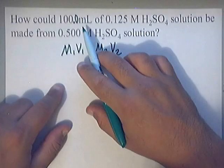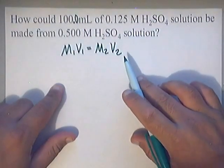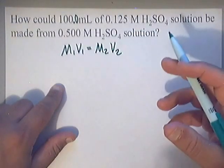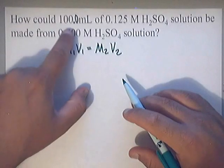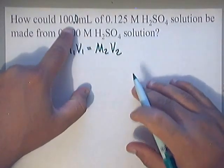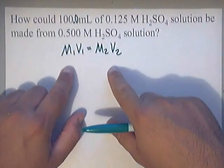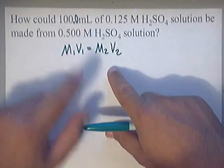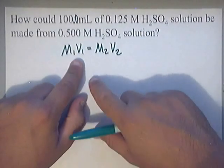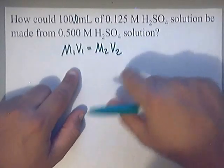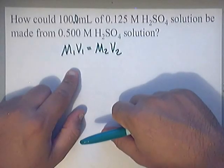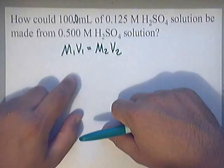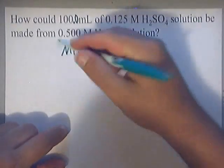If you do the calculation in milliliters, your answer will also be in milliliters. The only time you need to convert is if the answer is asked for in liters. If you convert both volumes to liters, the ratio stays the same — 100 divided by 200 is still a half, just like 1 divided by 2. You're just working yourself to death if you convert unnecessarily.